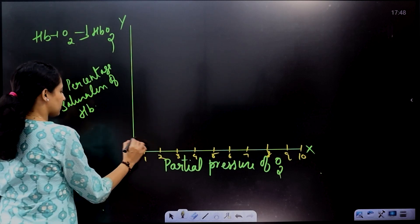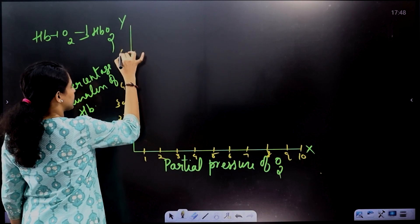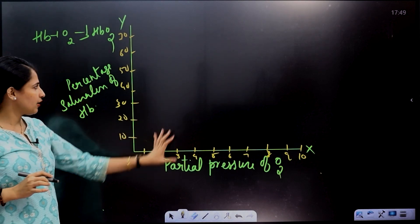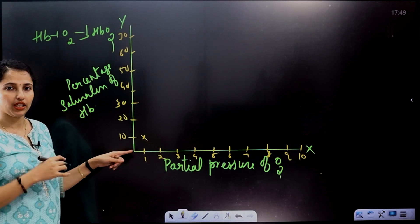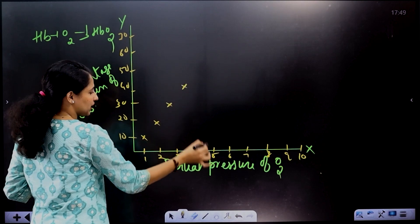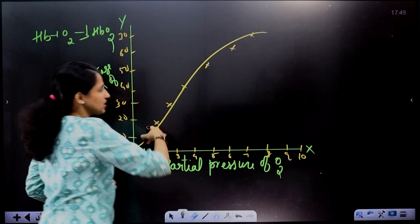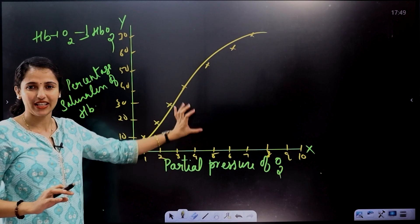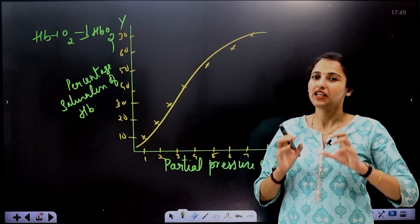On the y-axis, we plot percentage saturation — 10%, 20%, 30%, 40%, 50%, 60%, 70%, and so on. On the x-axis we plot partial pressure of oxygen. That is why we use the percentage saturation of hemoglobin against partial pressure of oxygen.